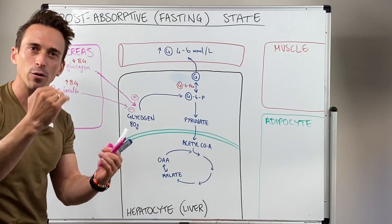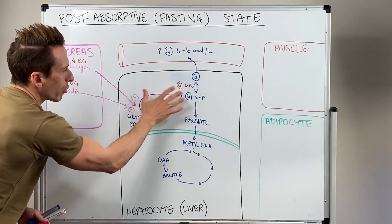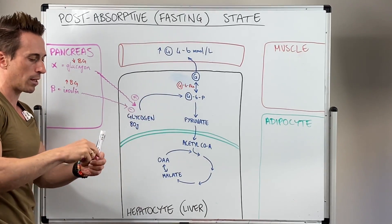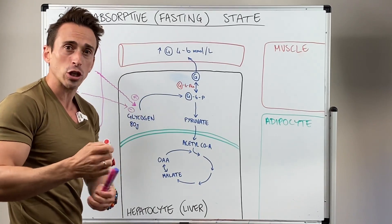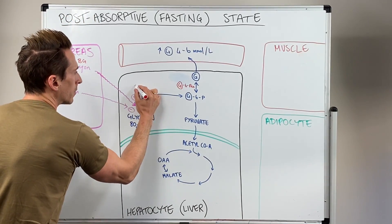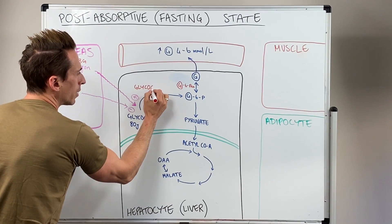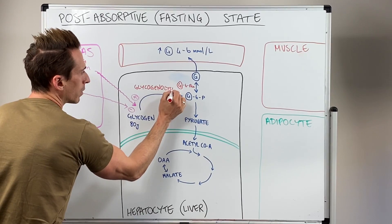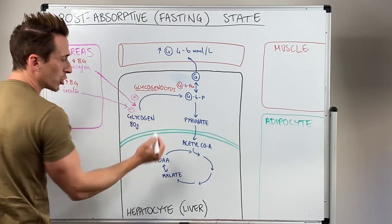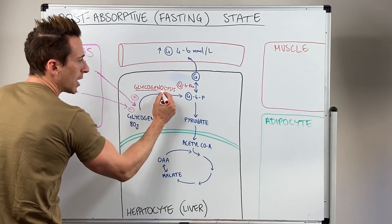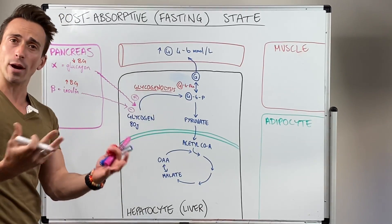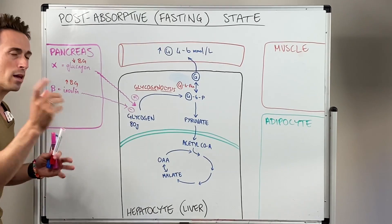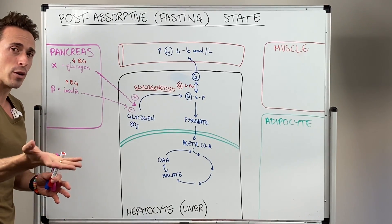Can you see that this is maintaining a happy, healthy balance? This whole process — the breakdown of glycogen into glucose — is called glycogenolysis. Glycogen plus lysis, meaning splitting apart or breaking apart. This is the breaking of glycogen into glucose to make energy. This is how we first begin to increase our blood glucose levels.